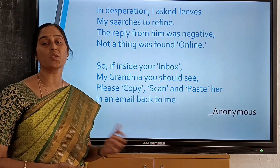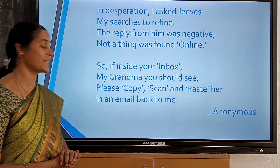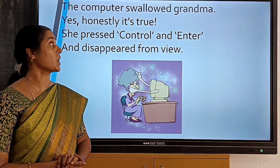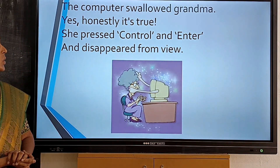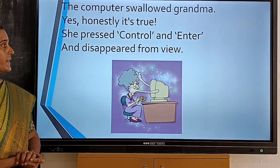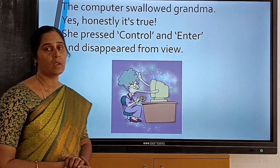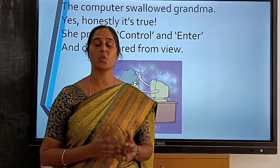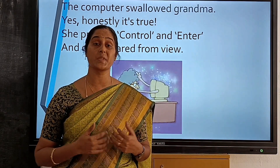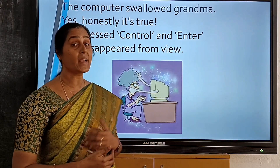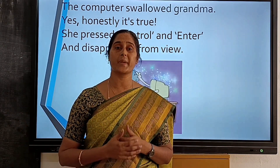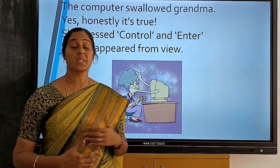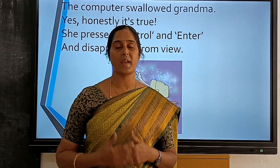Anonymous means unknown poet — we don't know the name of the poet. Let's get into the explanation of this poem. The computer swallowed grandma. Yes, honestly, it's true — she pressed CTRL and ENTER and disappeared from view. While the poet was chatting with her grandma online, suddenly the computer connection got snapped and her grandma disappeared. The grandma pressed CTRL and ENTER and her image disappeared from the screen. So the poet personifies the computer and says the computer swallowed grandma.